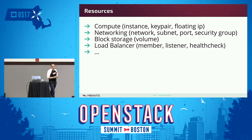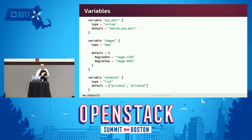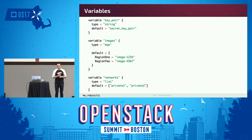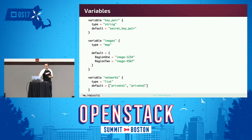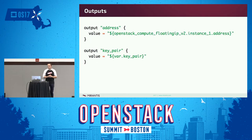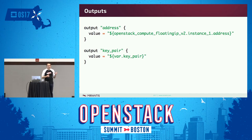Resources are the components of your infrastructure. For OpenStack you can create instances, floating IPs, Cinder volumes, etc. Variables define the parameterization for your Terraform code, and Terraform supports strings, maps, and lists as variable types. Outputs define a way to highlight certain values when you run `terraform apply`. For example, in our Hello World case, I want to know what floating IP will be assigned to the VM because I didn't know it before running.